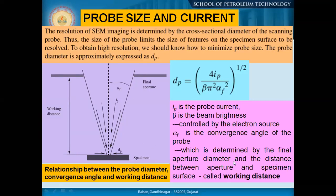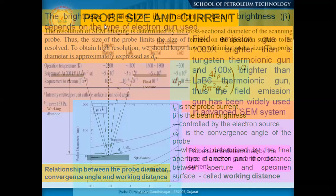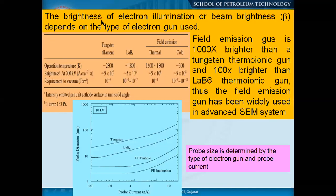The convergence angle is determined by the final aperture diameter and the distance between the aperture and the specimen surface, called the working distance. Depending on your source, your system, your aperture, and the specimen surface position, you can determine the resolution of your instrumentation.